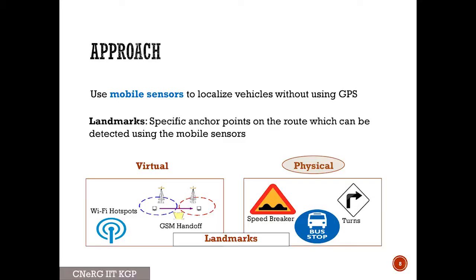I'll explain the overview of the approach. We mostly rely on the mobile sensors — the inertial sensors inside the smartphone — to localize its position without using GPS. Here we leverage on landmarks. Landmarks can be of different kinds: Wi-Fi hotspots, cell handoffs, speed breakers, turns, or bus stops. These are anchor points inside the route which we characterize as particular locations, and they will be used for localization.